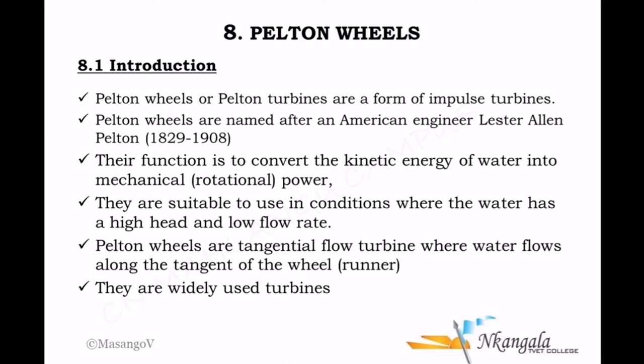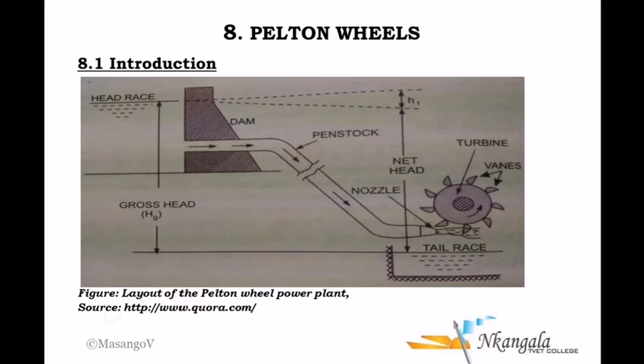Pelton wheels are therefore suitable to use in conditions where the water has a high head — that high head represents high potential energy and low flow rate. They are tangential flow turbines where the water jet is tangential to the radius of the wheel, also called the runner. They are a widely used form of turbines. Water situated at an upper area is drawn to the bottom, generating kinetic energy from the potential energy.